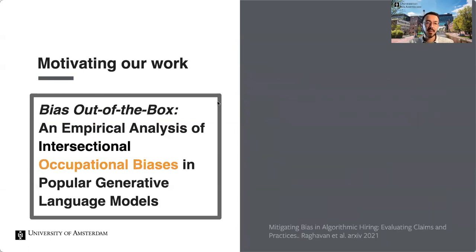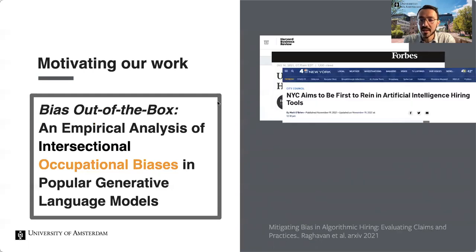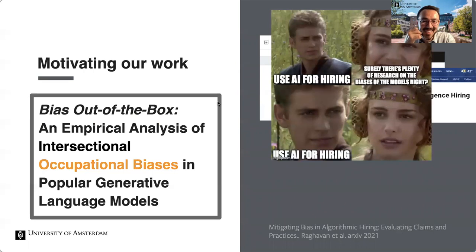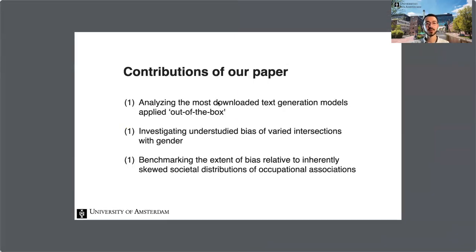Additionally, we compare this artificially generated distribution to the ground truth distribution of the U.S. labor market. Intersectional biases are a necessary consideration because a single axis of analysis treating gender and race as mutually exclusive categories distorts the reality of marginalized communities. AI-assisted hiring tools are being used in industry, written about in Harvard Business Review, Forbes, and CNBC — surely there must be plenty of research on the biases of these models? Well, not really. Our paper makes three main contributions: analyzing the most downloaded text generation models applied out-of-the-box.